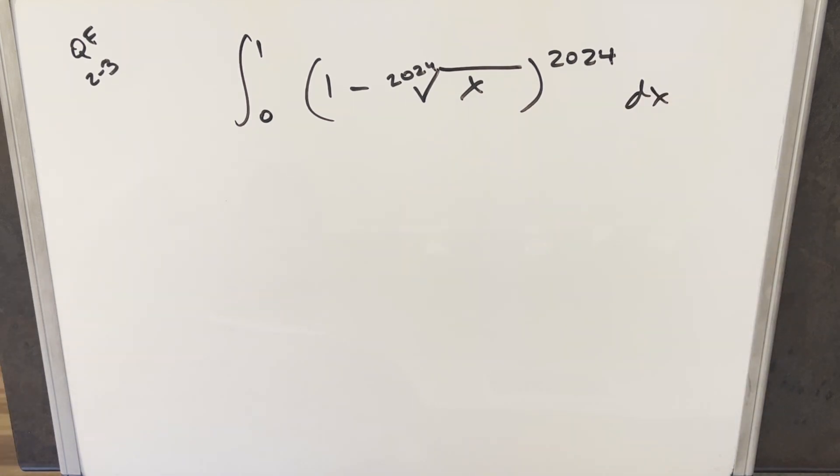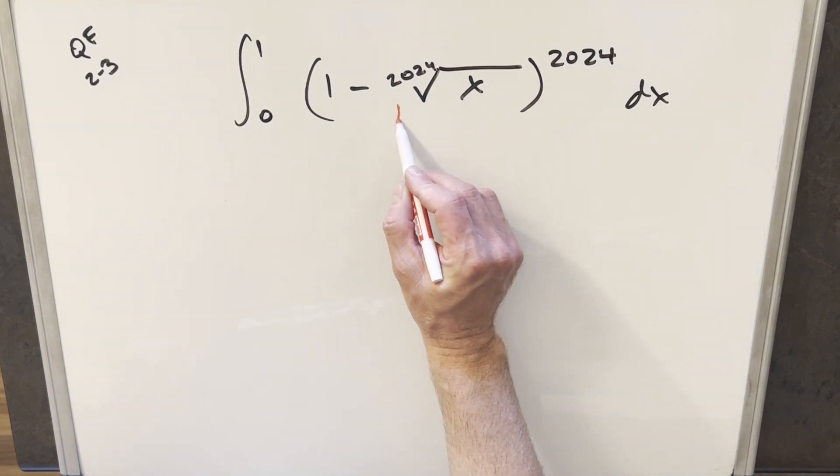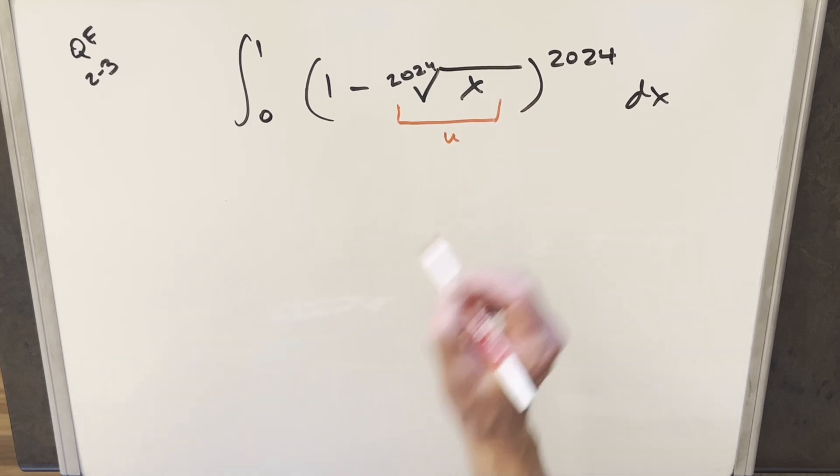Okay, there's actually a formula for this where we could basically go right to a solution right away, but I'm not sure it's that familiar. So let's do a u substitution to try to clean it up a little bit first. So what I want to do is a u substitution here just for the 2024th root of x.